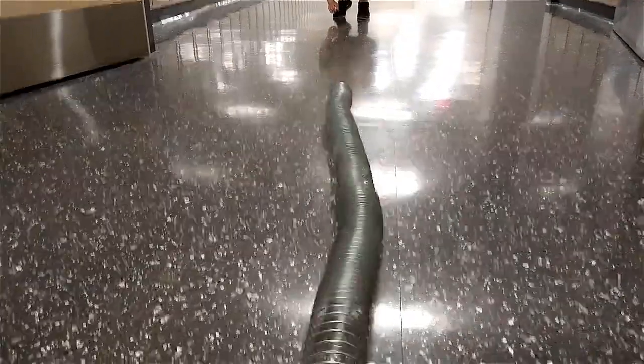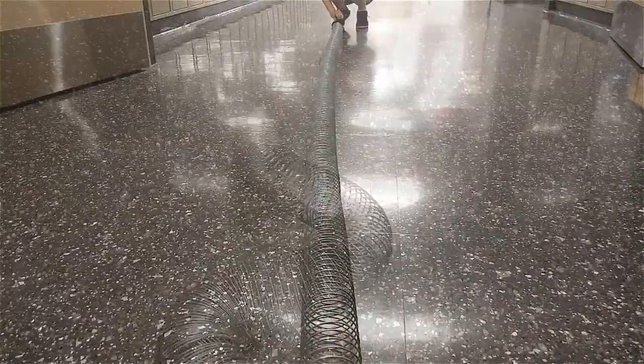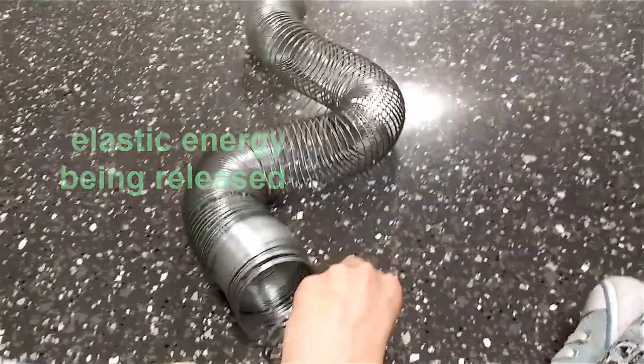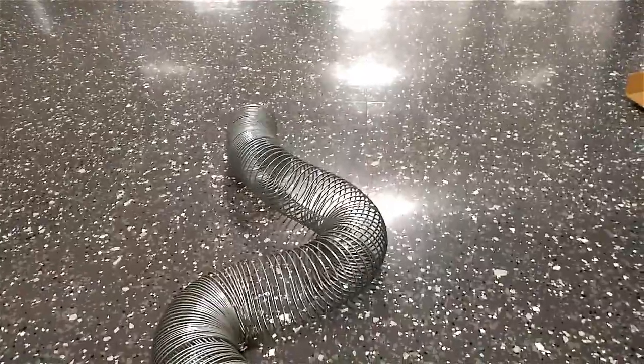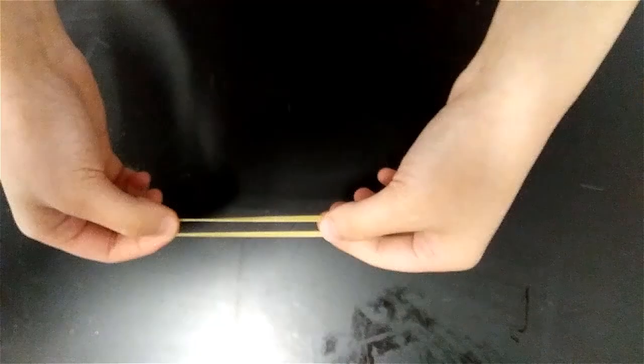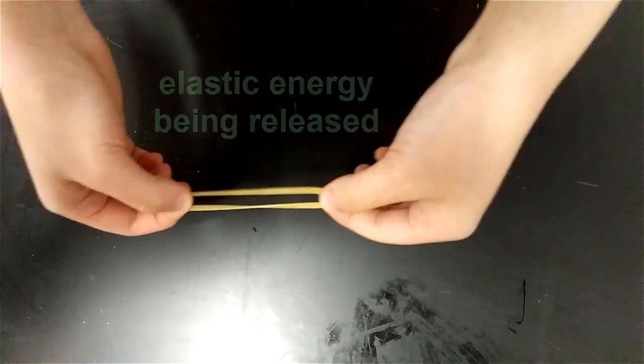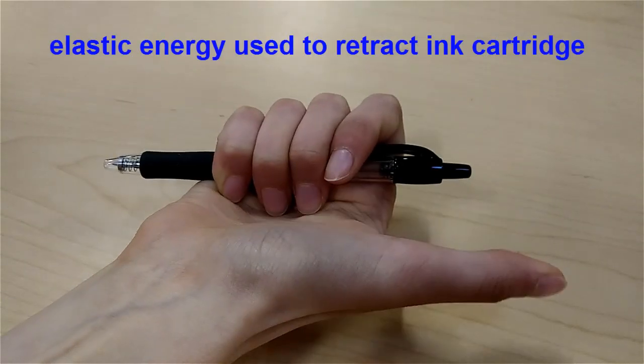Springs are resilient devices that can store and release elastic energy. Elastic energy is the energy that can be stored in elastic materials as it is stretched out or compressed. For example, a rubber band stores elastic energy as it is stretched out and releases elastic energy as it changes back to its original shape.